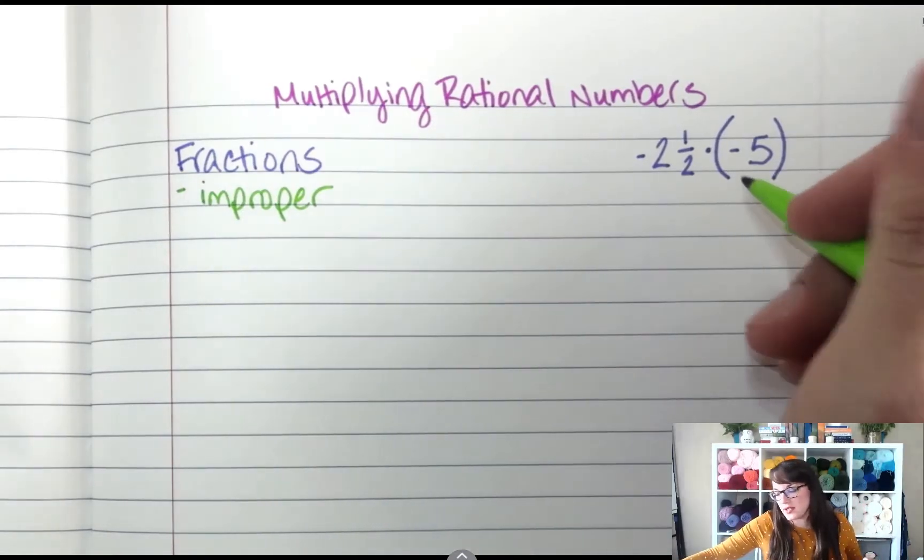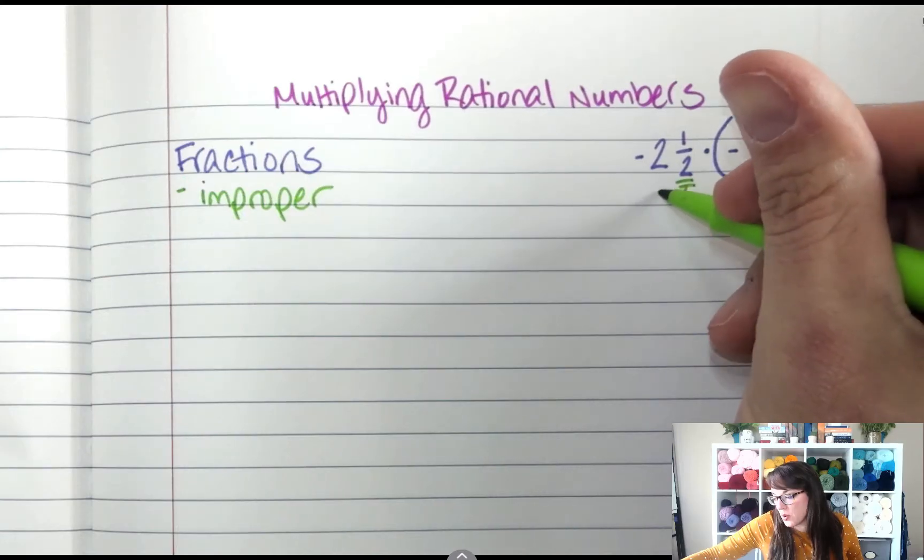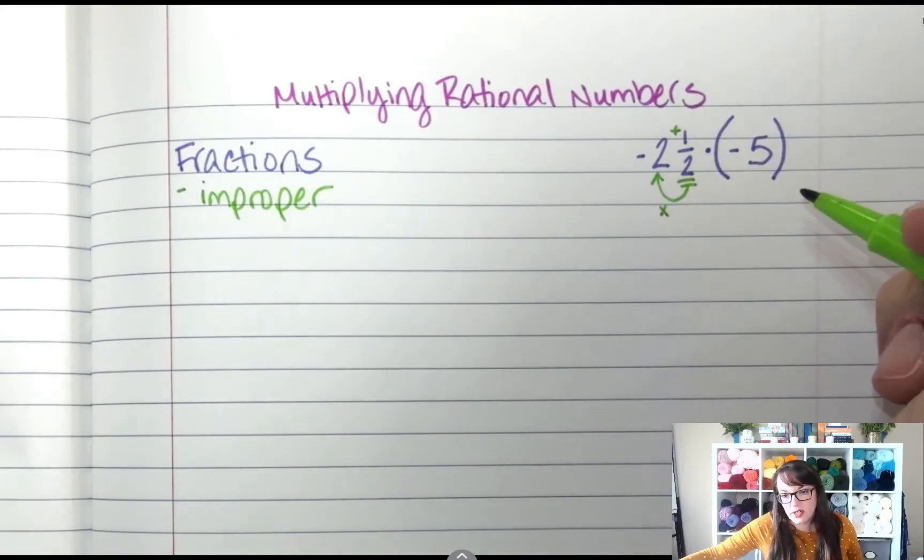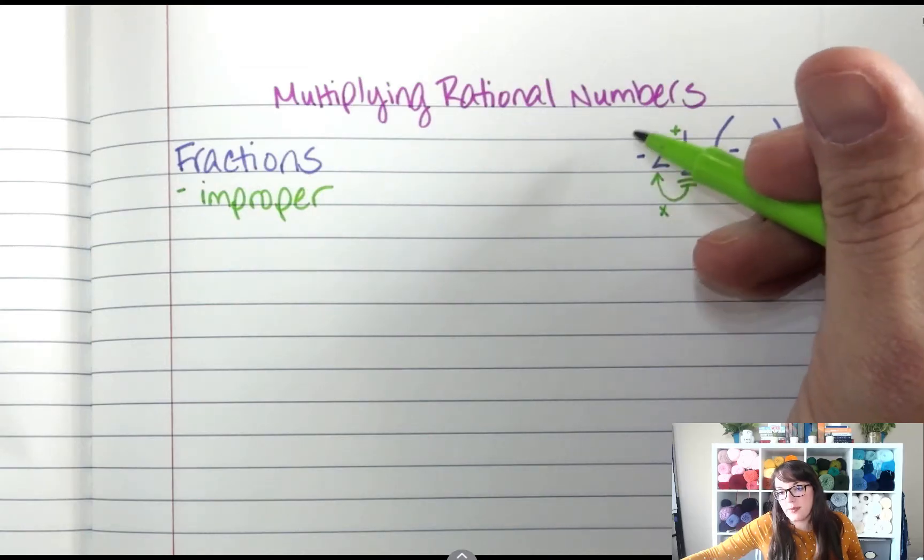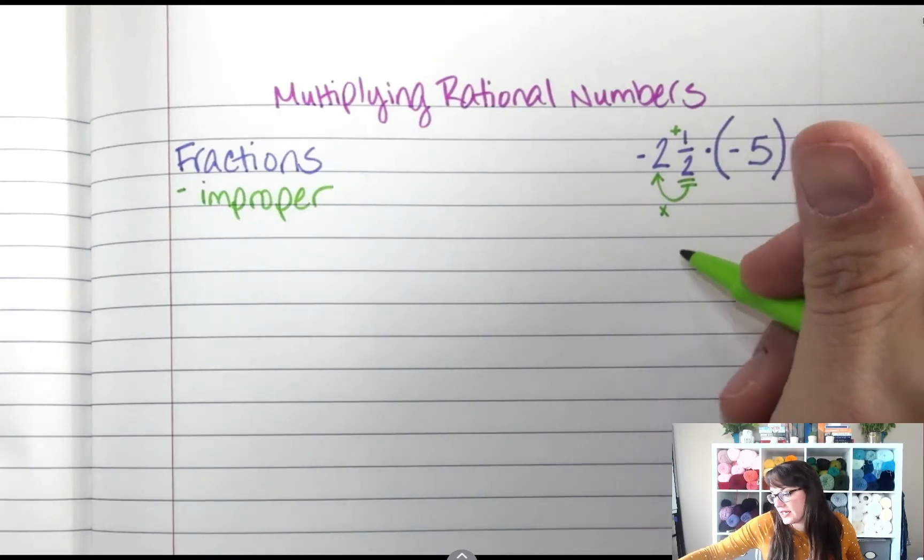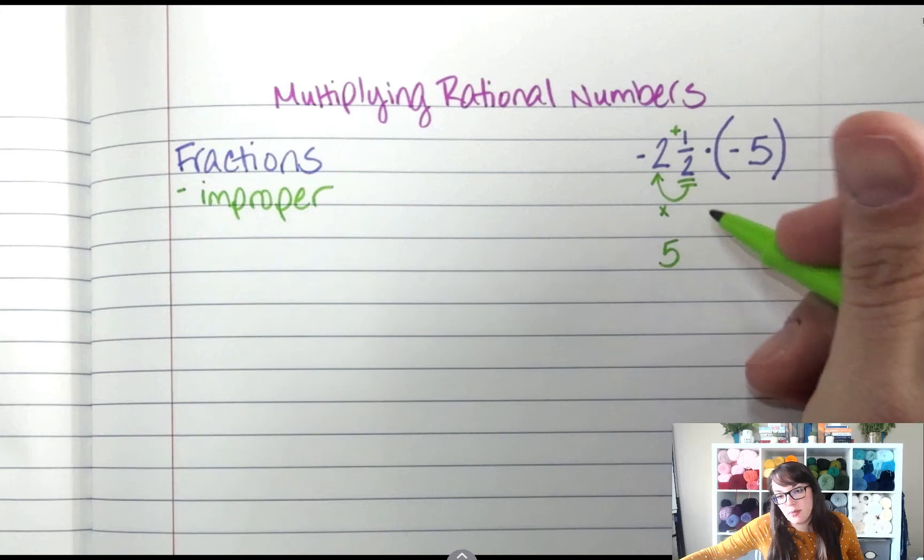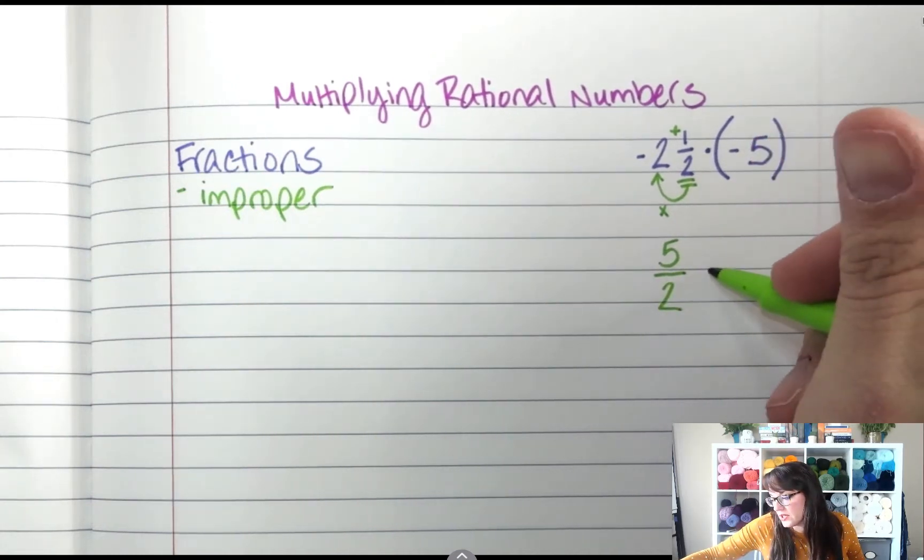And we do that by taking the denominator, multiplying it by the whole number, and then adding the numerator. So 2 times 2 plus 1 is 5. So we have 5. Keep the denominator. So 5 over 2 times. We're going to pause there.